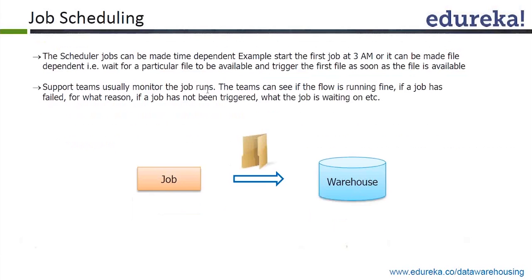Scheduled jobs can be made time-dependent or file-dependent. As I said, the operations teams generally have a monitoring system available in their data warehouse or ETL system, where they can see and monitor — or get triggers for — job failures or successful completions. There is a team which is always monitoring these jobs; it cannot be left alone.